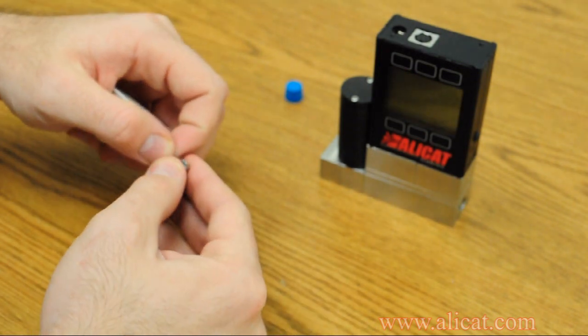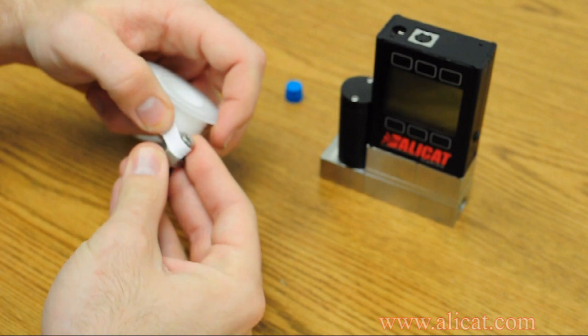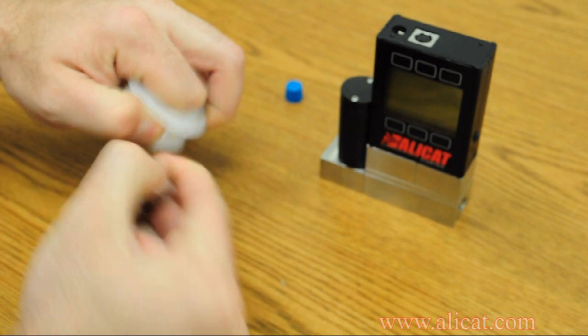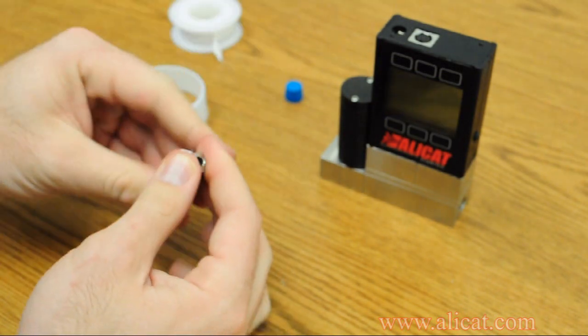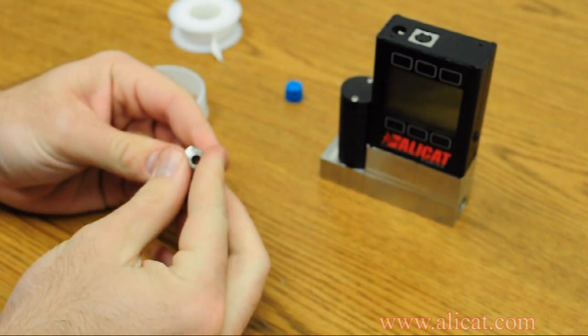For each fitting, wrap the Teflon tape around the threads in a clockwise fashion as seen looking towards the threaded end. Two to three complete wraps should be sufficient for most fittings. It is very important to leave the first few threads uncovered so that no tape can be sheared off and end up inside the flow meter.